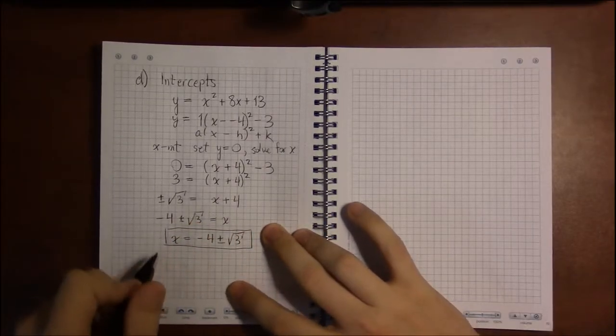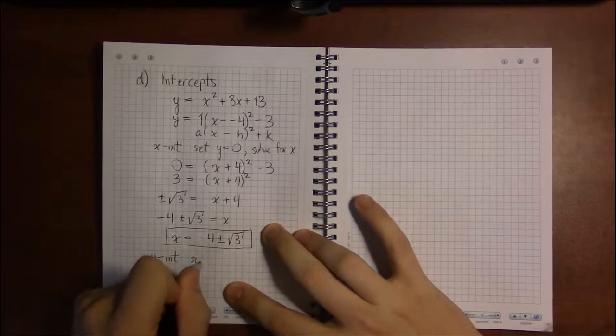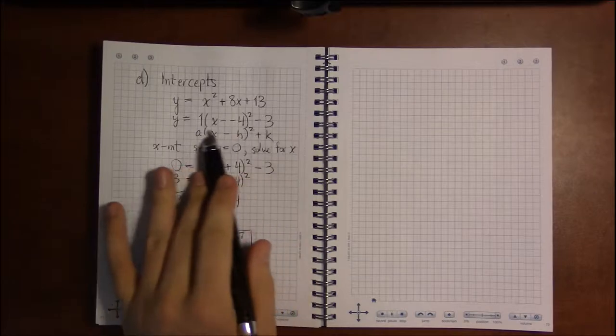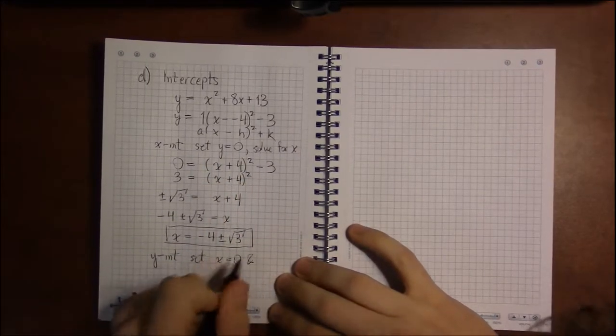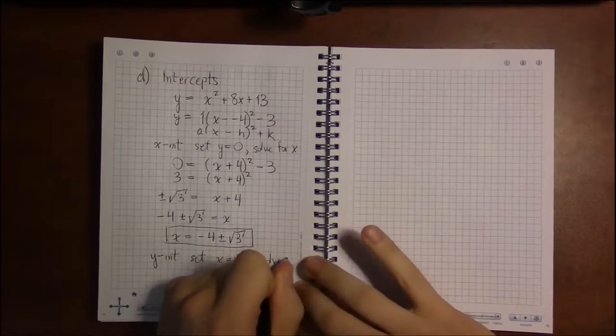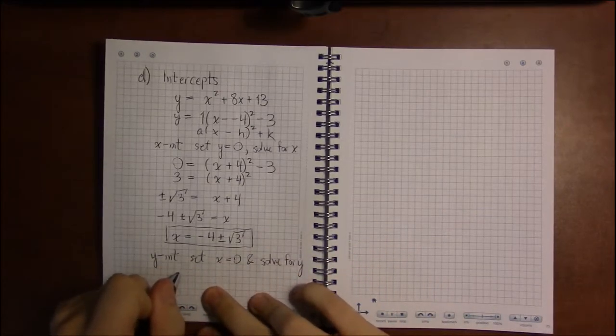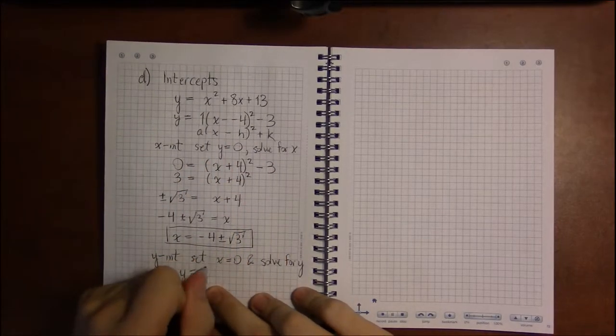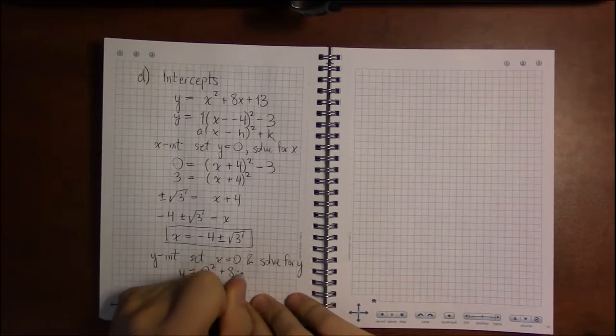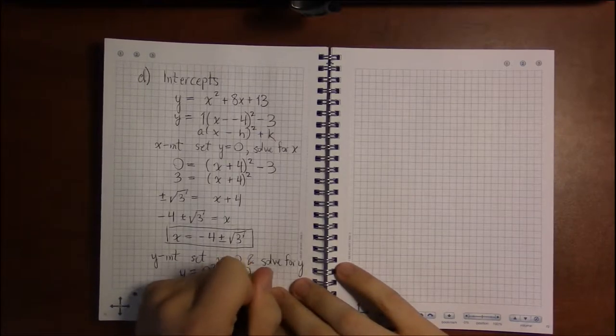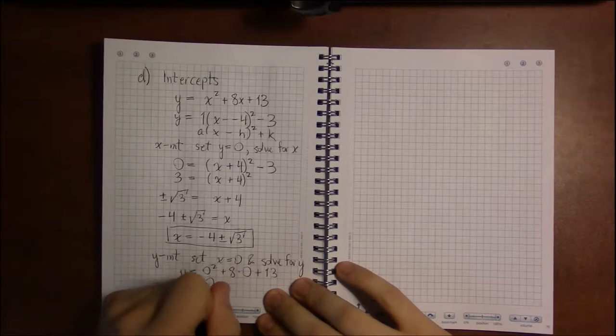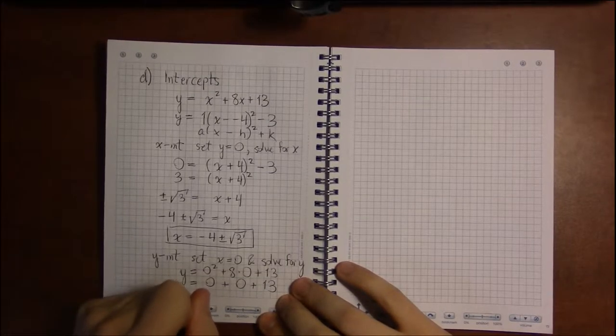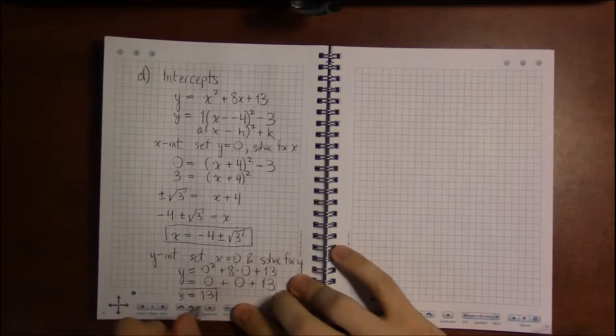For the y-intercepts, you set x equal to 0 and solve for y. And in this case, it's actually easier to look at the standard form. There's nothing wrong with plugging 0 in to the vertex form, but the standard form is a lot easier. So plugging 0 in for x into the standard form. So I'm looking at this top formula here. So it's 0 squared plus 8 times 0 plus 13. Well, 0 squared is 0. 8 times 0 is 0. And we have 0 plus 0 plus 13, which is just 13. So 13 is our y-intercept.